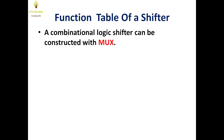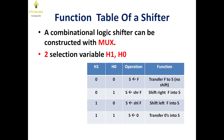We will implement the shifter using a multiplexer. There are two selection lines, H1 and H0. This is the function table. When H1=0, H0=0, there is no shift — direct transfer. When H1=0, H0=1, this is right shift. When H1=1, H0=0, this is left shift. When H1=1, H0=1, transfer all zeros to output. These are the four operations.